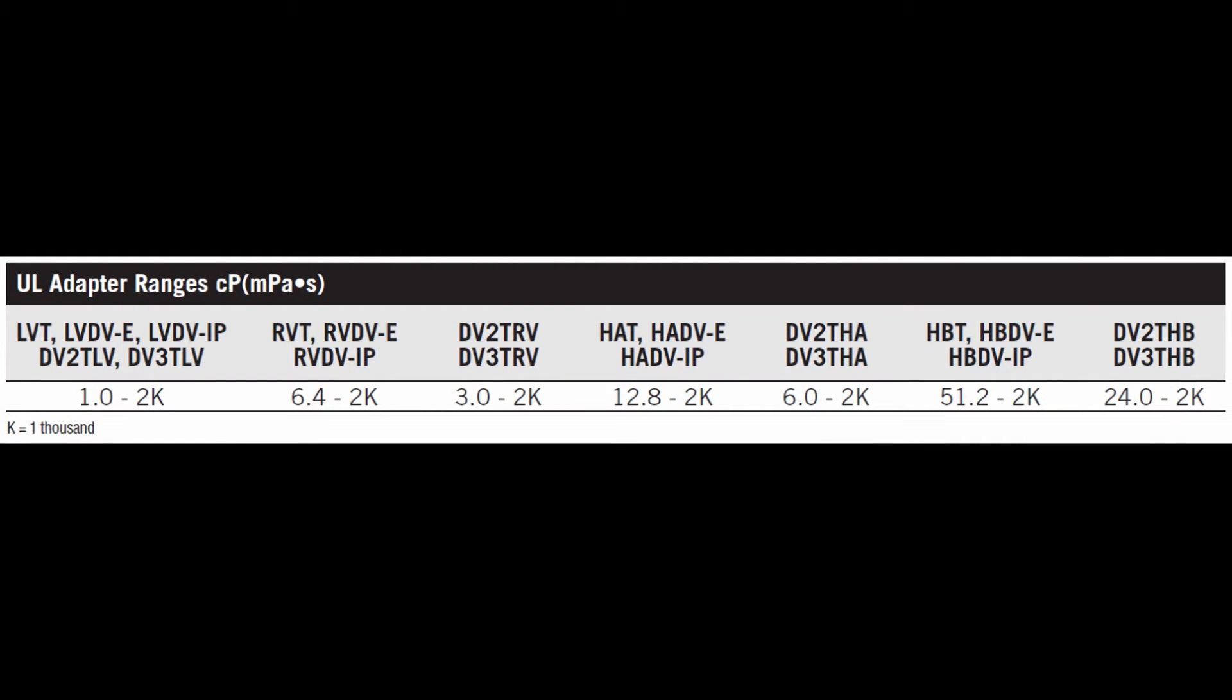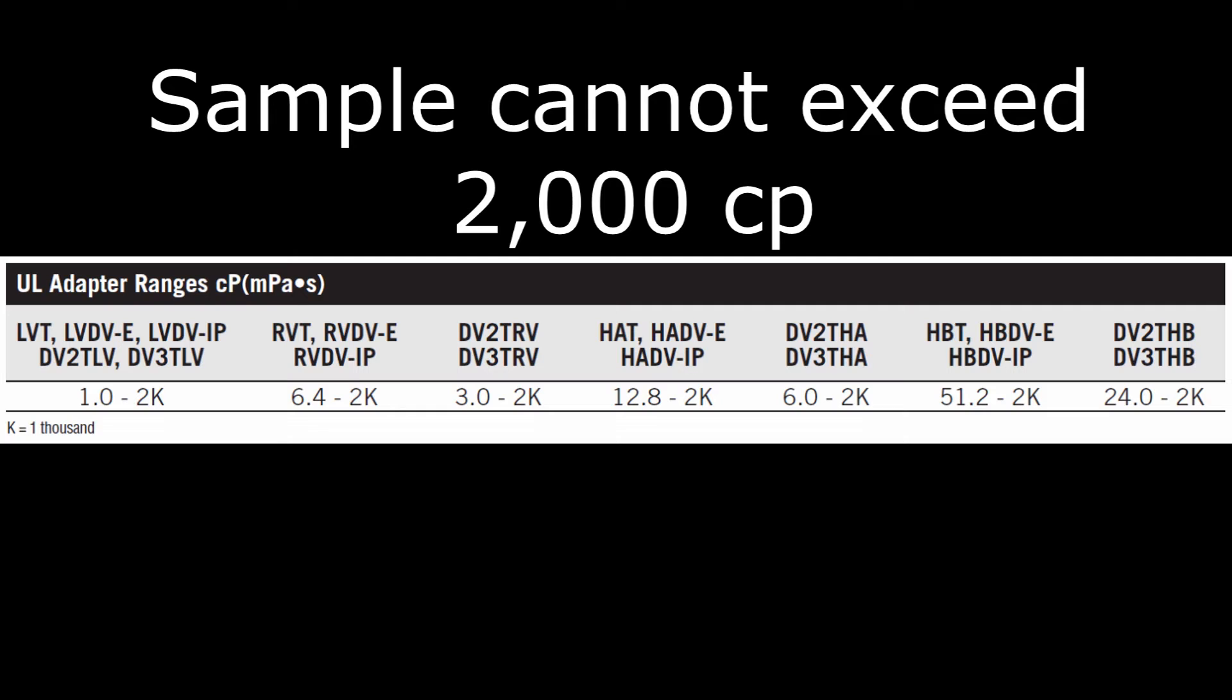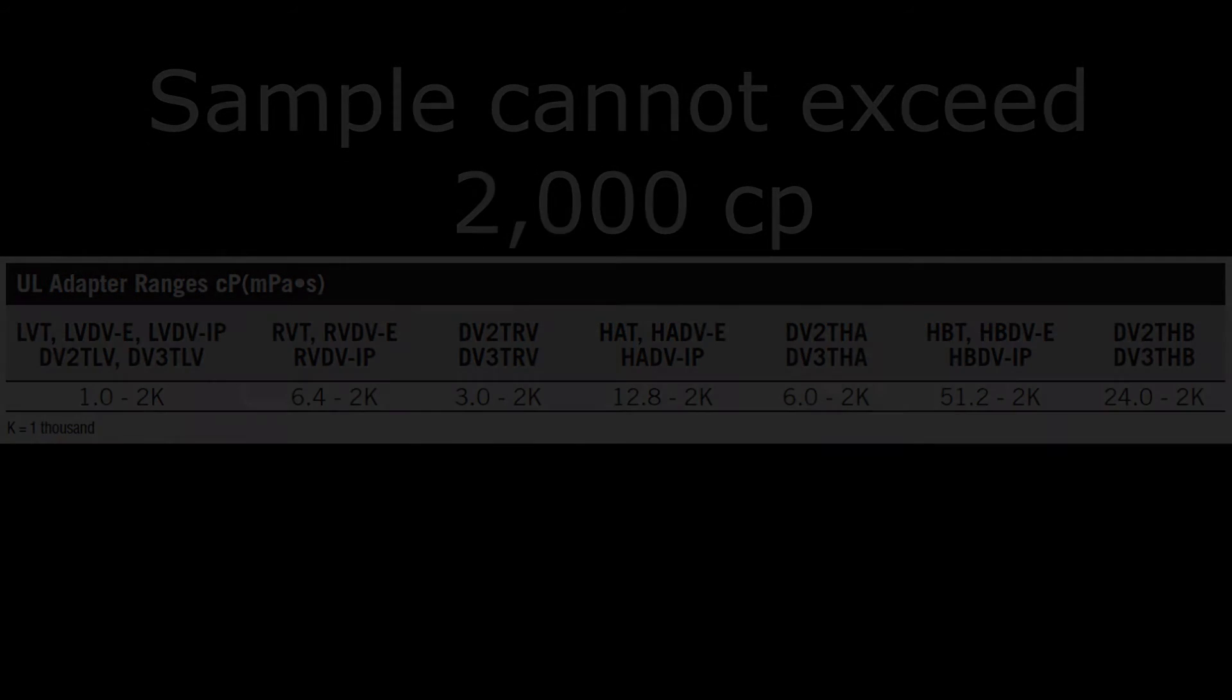Please note the UL adapter is not intended for any materials over 2,000 centipoise. If the material is over 2,000 centipoise, it will be too thick to immerse the spindle into the chamber and can cause internal damage to the viscometer.